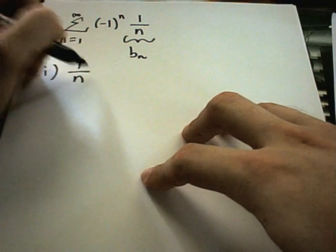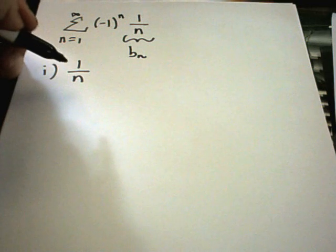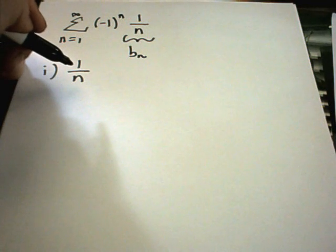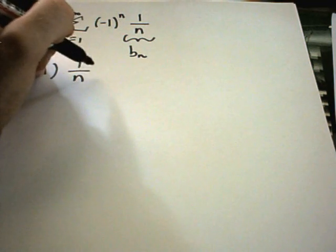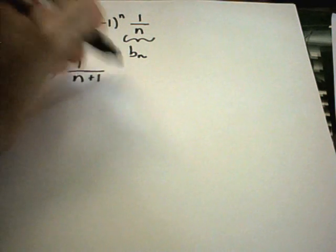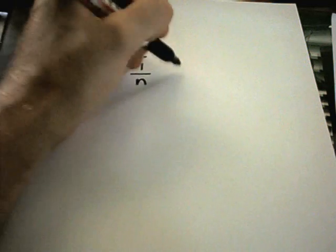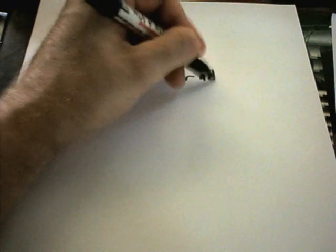So the first case, 1 over n. Well, again, there's two ways to justify decreasing. You can either use the first derivative test. In this case, clearly, if I plug in n plus 1, that's going to be smaller than just when n is in the denominator. For all n greater than or equal to 1, right?